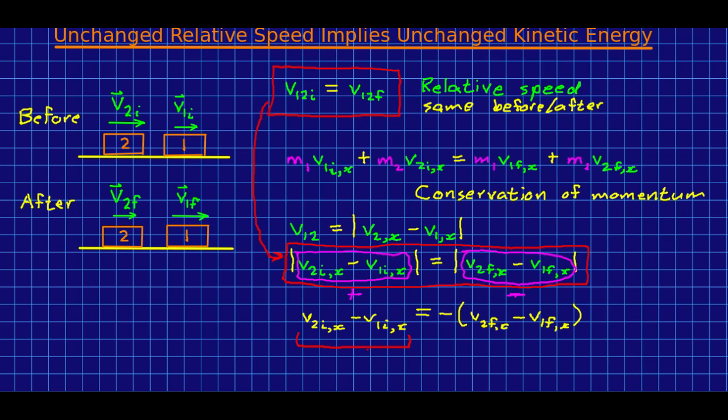This is the x component of v12. In other words, it's the x component of the relative velocity of these two. v12. And the other side is the negative of v12x. And so it's just that this one is initial and this one is final. What is that telling us?